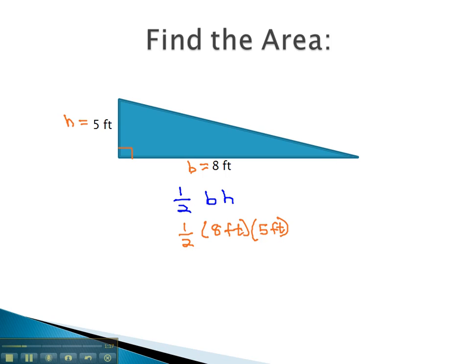We can multiply these straight across. 1 half of 8 is 4 feet, times 5 feet, and 4 times 5 is 20 feet times feet, or feet squared. The area of this triangle is 20 square feet.